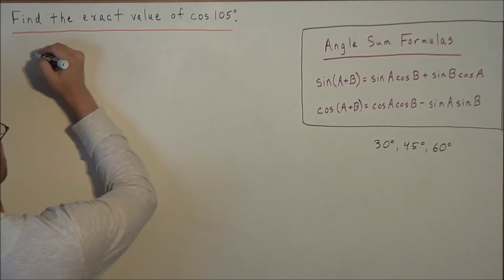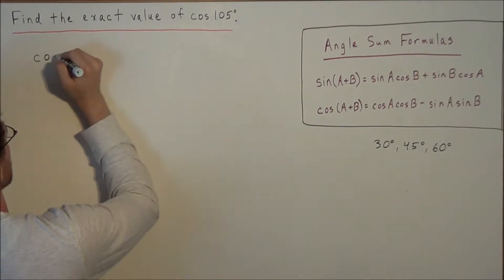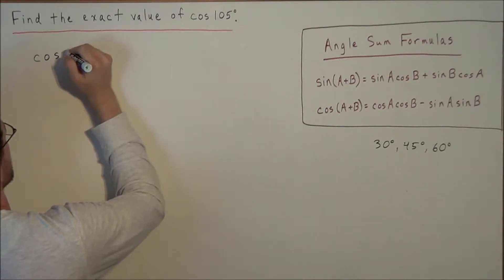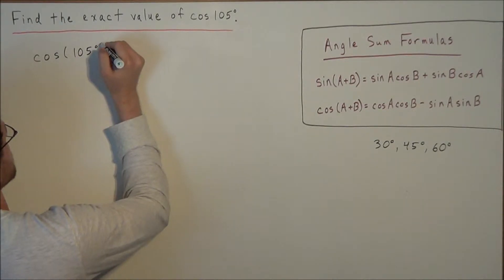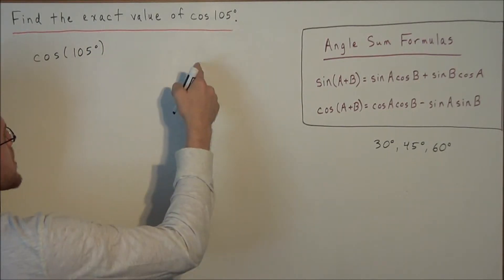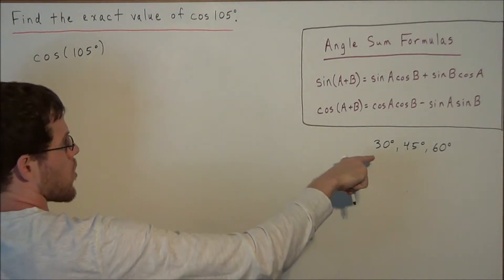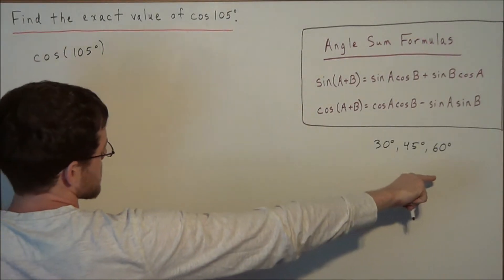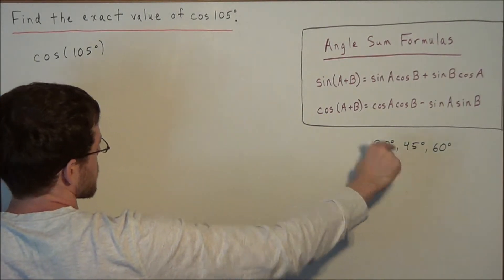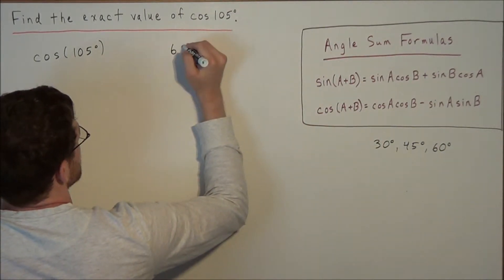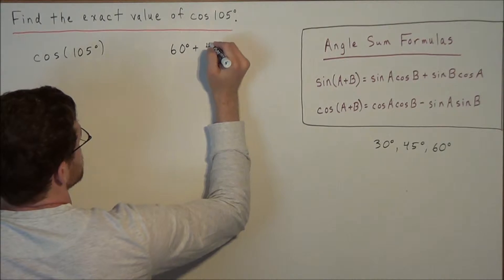For 105 degrees, we're looking at the cosine of 105 degrees. We could analyze and say, well, 105 degrees is equal to 60 degrees plus 45 degrees. So we know that this is true.